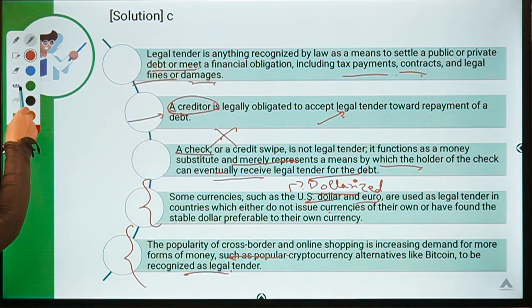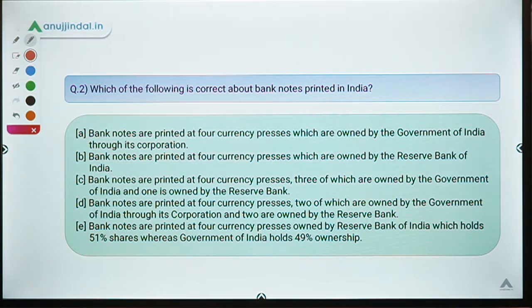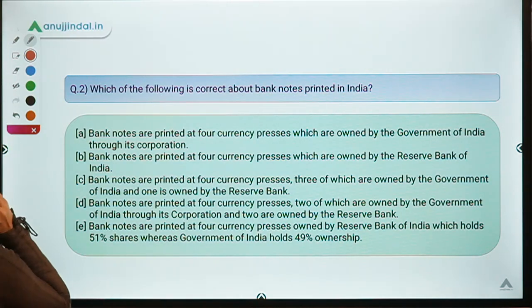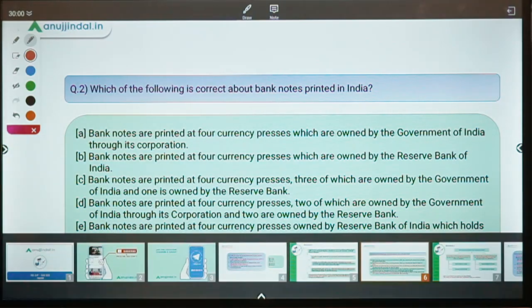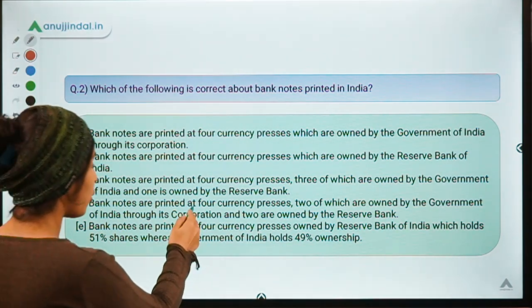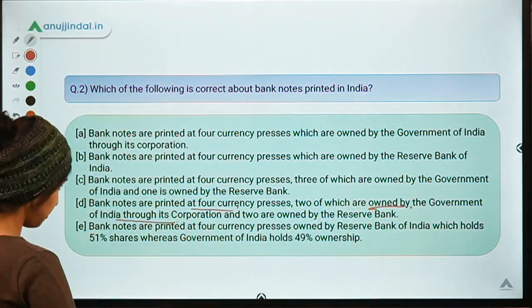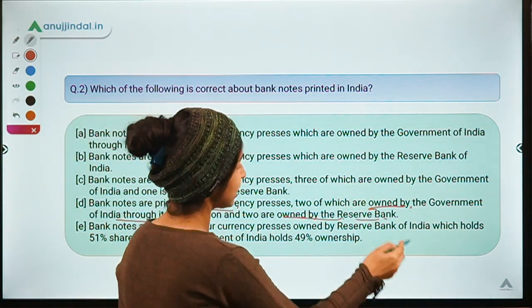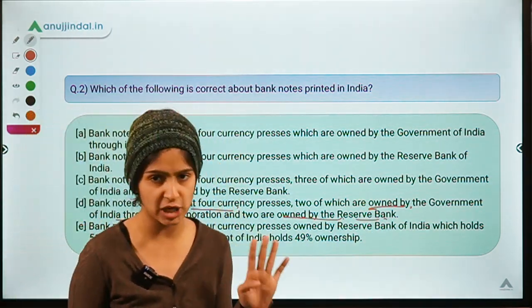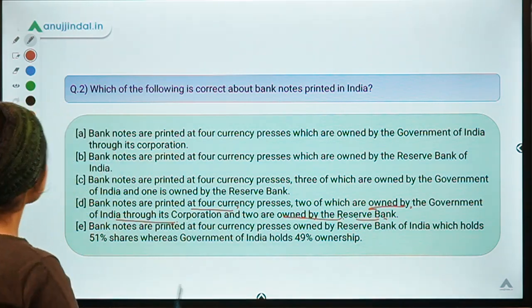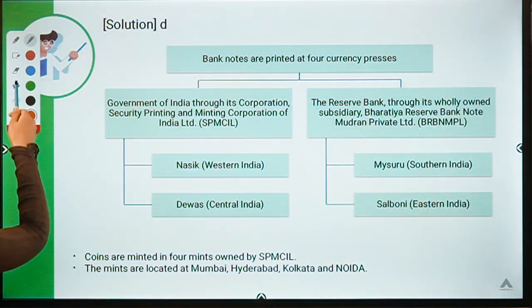Moving ahead to question number two, which says: which of the following is correct about bank notes printed in India? Five options are given and you have to select the correct one. The correct option is option D — bank notes are printed at four currency presses in India, two of which are owned by the Government of India through its corporation, and two are owned by the Reserve Bank of India.